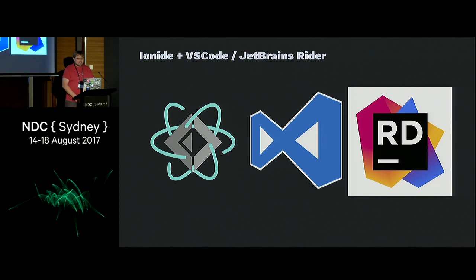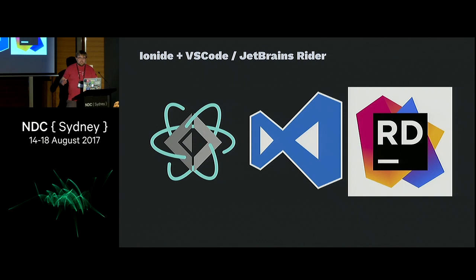In terms of tools, there are really two approaches. I prefer Ionide, which is a plug-in for VS Code, and that gives you everything from IntelliSense, code completion, and it shows type hints above the functions. And Rider, I think, came out either this month or last month — Rider is JetBrains' solution for doing .NET development on Mac and Linux, built on top of the IntelliJ platform.